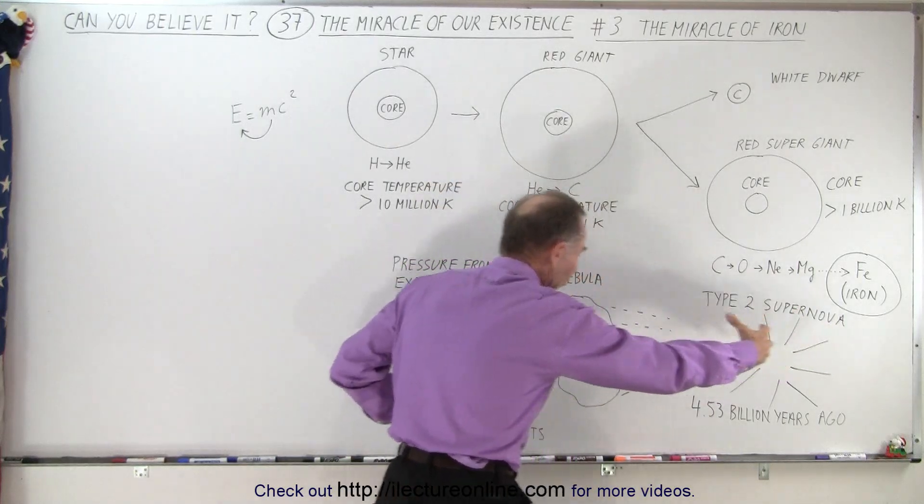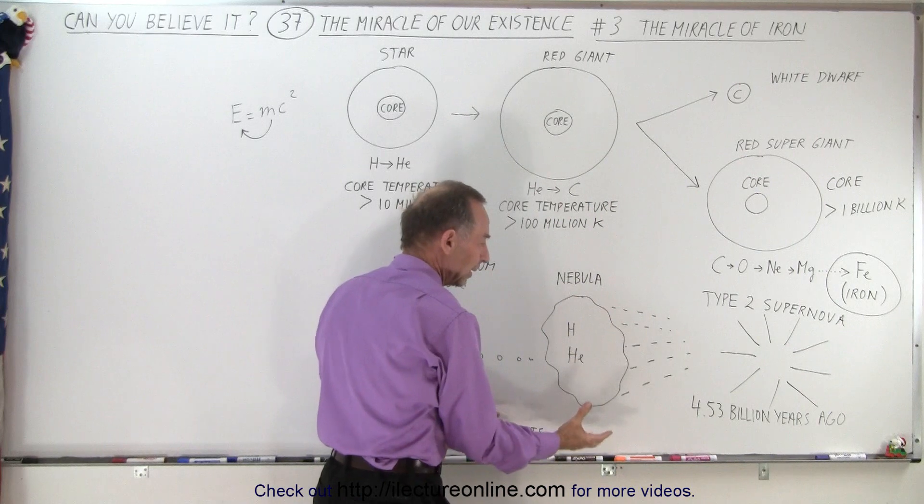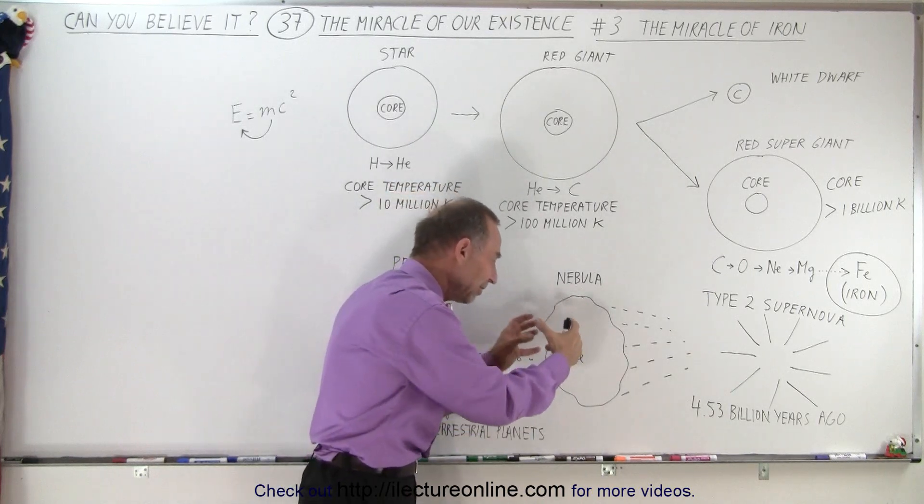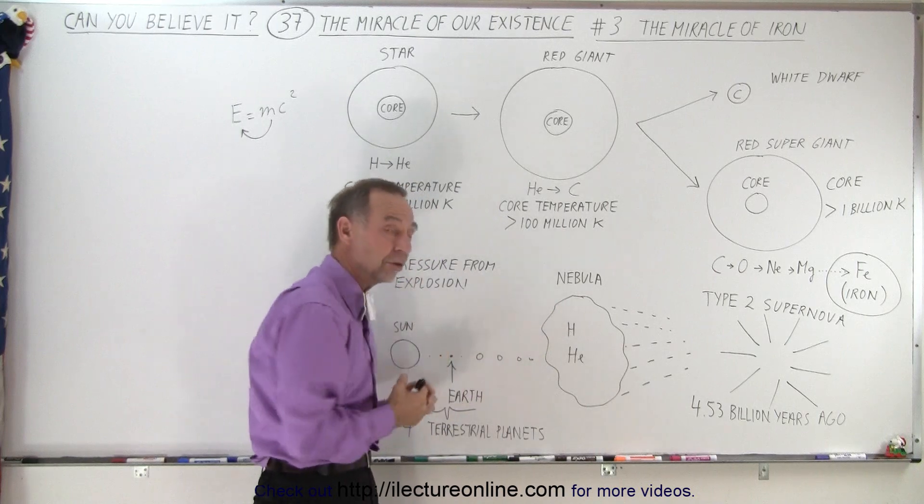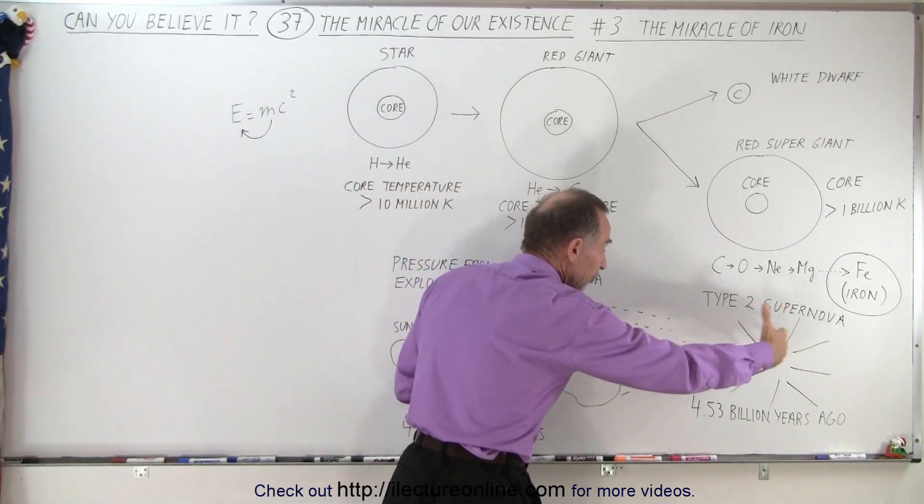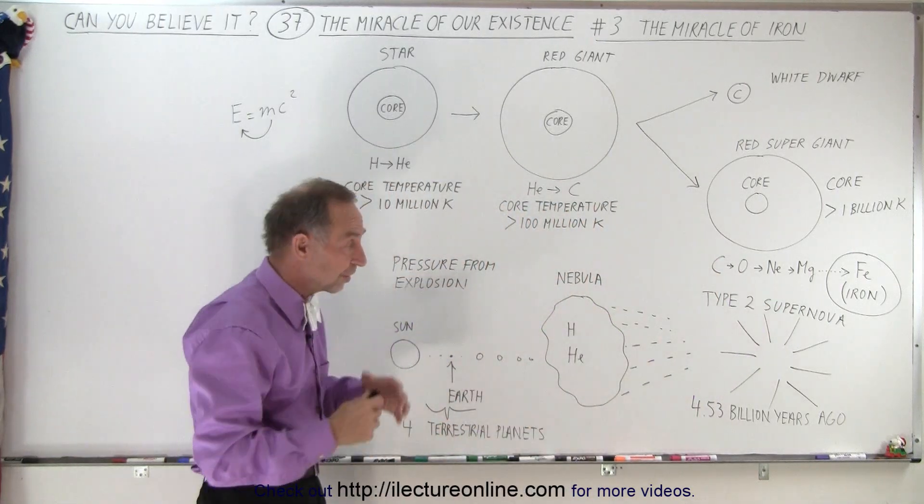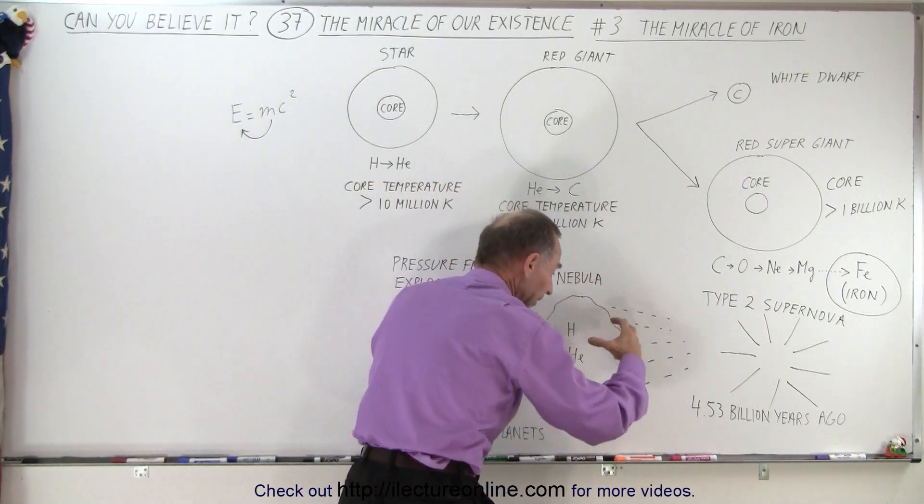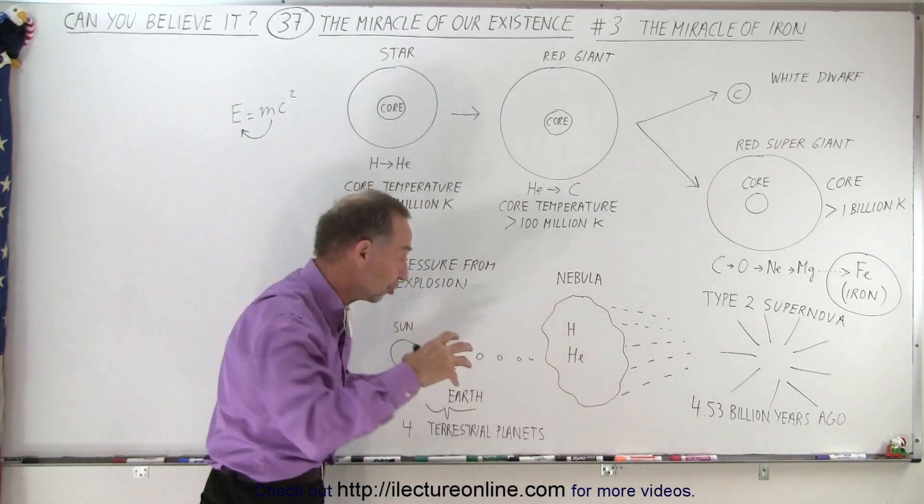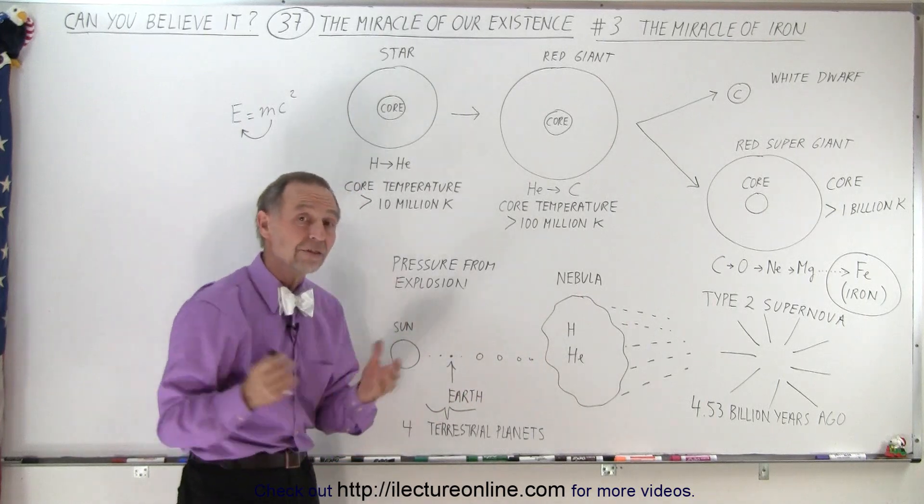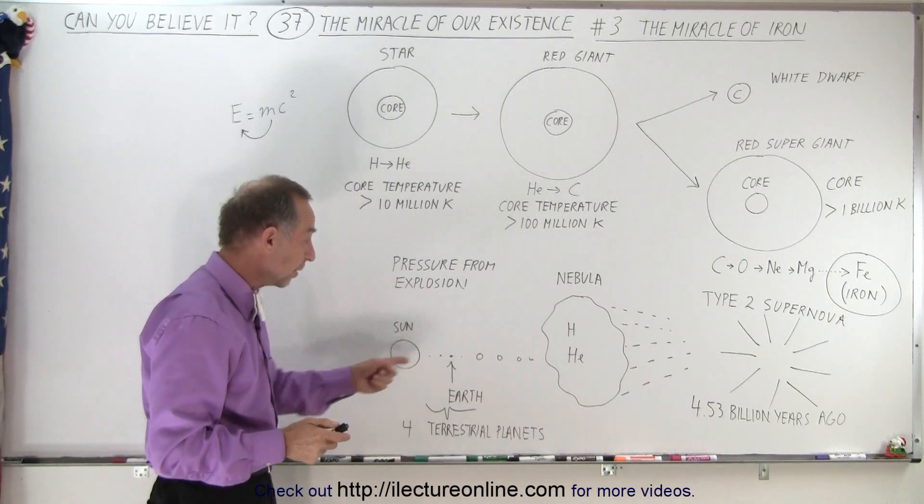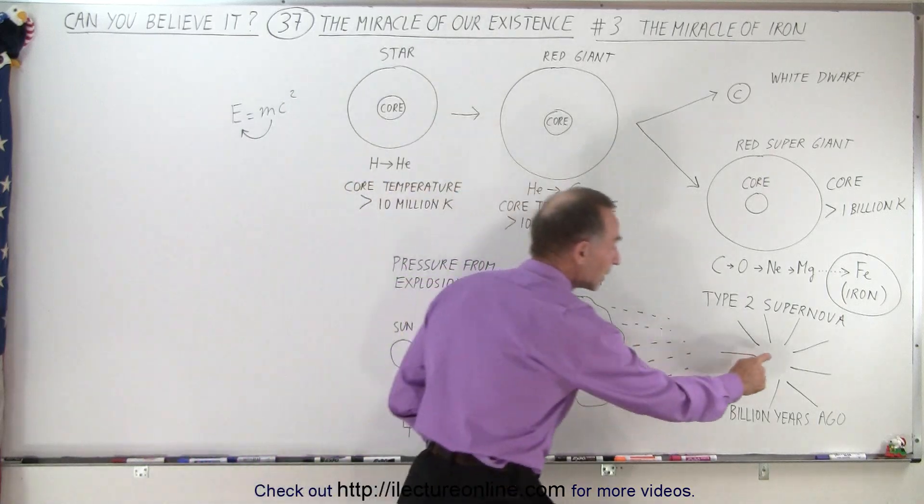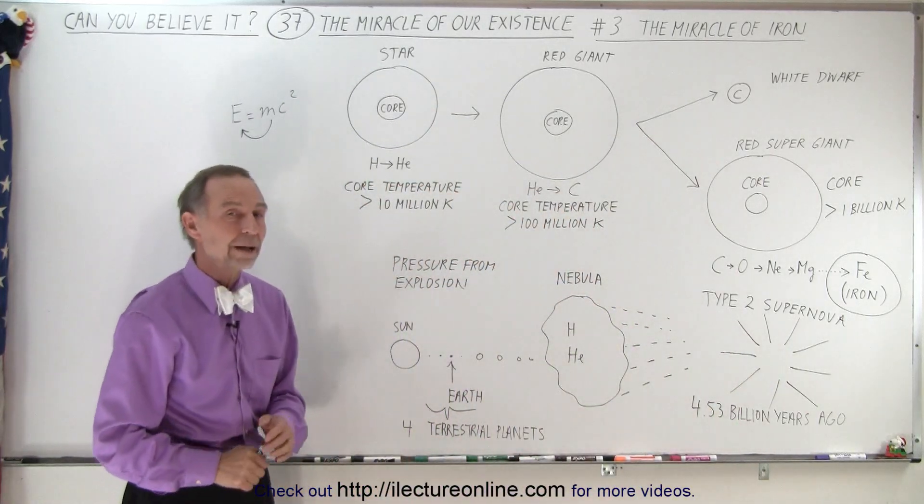That material then spread out, it smashed into nebulas nearby, nebulas primarily containing hydrogen and helium. Nebulas when they are compressed efficiently, and you have enough gravitational force, can collapse into a star and planets like a solar system. One of the events that can make that happen is the pressure from one of those big supernova explosions, and that's what happened 4.53 billion years ago. The pressure of the explosion and all the infusion of the material caused this nebula to collapse. High enough density was reached for a star to gravitationally begin to form with its planets, and that's how our solar system formed. It only formed, and only these materials were available to make the four terrestrial planets, including Earth, because they were created inside this supermassive explosion, this type 2 supernova explosion.